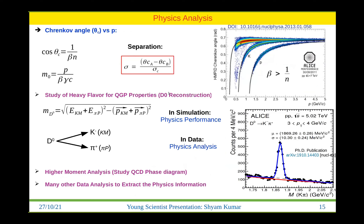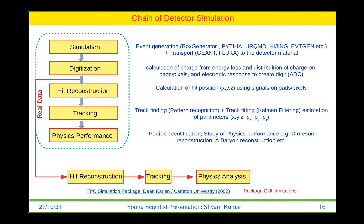Once we have PID, we can reconstruct secondary particles like D0 — using a combination of identified particles. In simulation this is called physics performance evaluation; in real data it is physics data analysis. The simulation chain is: event generation → transport → digitization → hit reconstruction → tracking → physics performance evaluation. In real data we only have charge on the pads, then hit reconstruction, tracking, and physics analysis.